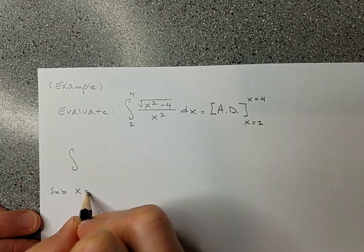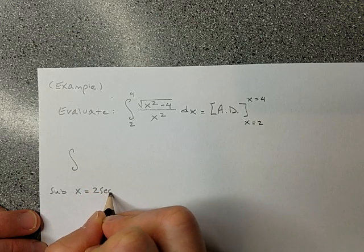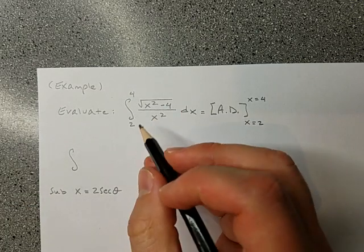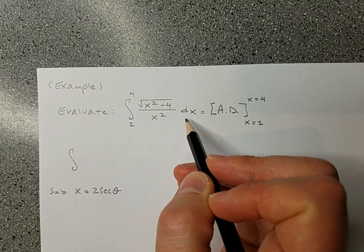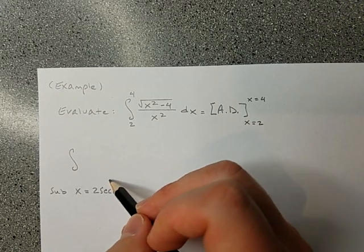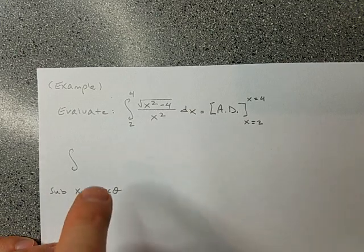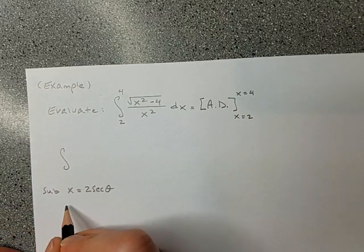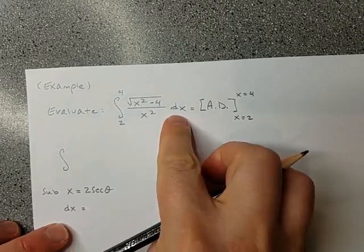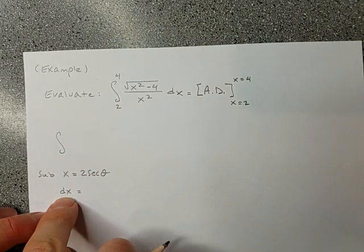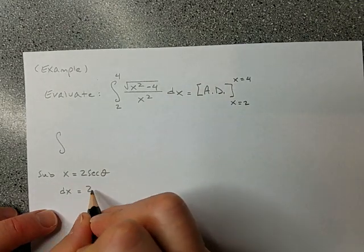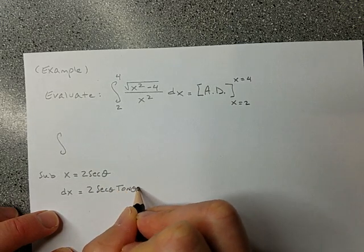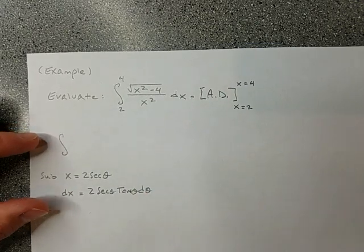So x is 2 secant theta. I need to get the integral in terms of theta and d theta. I also need to substitute dx: the derivative of secant is secant theta tangent theta, so dx equals 2 secant theta tangent theta d theta. That takes care of all the substitutions I need.